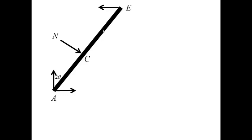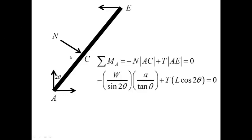Next, I will proceed to the bar. And for the bar, I'll write just one equation: sum of the moments about A. This equation engages the force N and the tension in the cable T. The arms are AC because N is perpendicular to the bar, and the arm is AE. But here's a mistake. It has to be AE times cos 2θ.